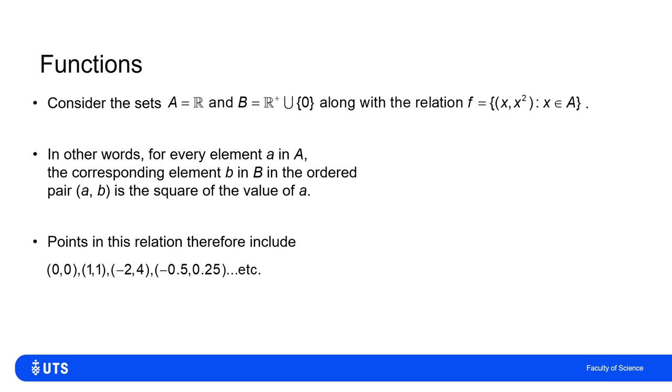I can write down an infinitely long list of all points in the relation f. When I plot where those points sit, you may well recognize the familiar parabola. It's effectively saying if I pick an input value x, any real number, the output value is that value squared.